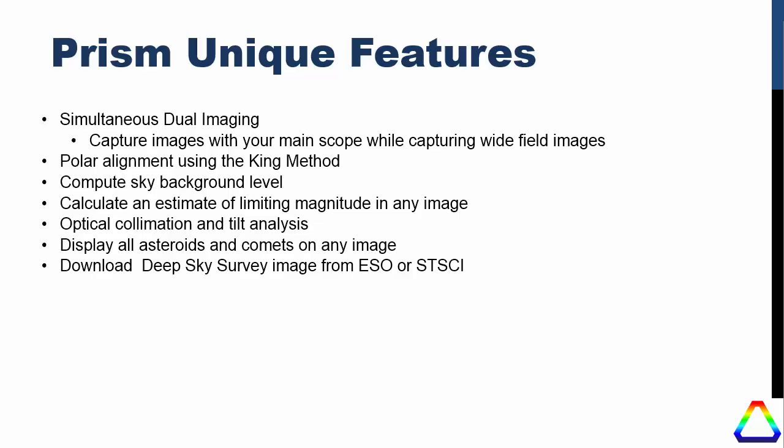Polar alignment is another unique feature — we offer the King method, which I've used very effectively, particularly in the southern hemisphere, making it very quick to do a polar alignment. We can compute the sky background level, either using a Unihedron meter — an excellent product — or directly with the analysis tool built into PRISM. We can also calculate an estimate of the limiting magnitude of any image using the photometry function built into PRISM.